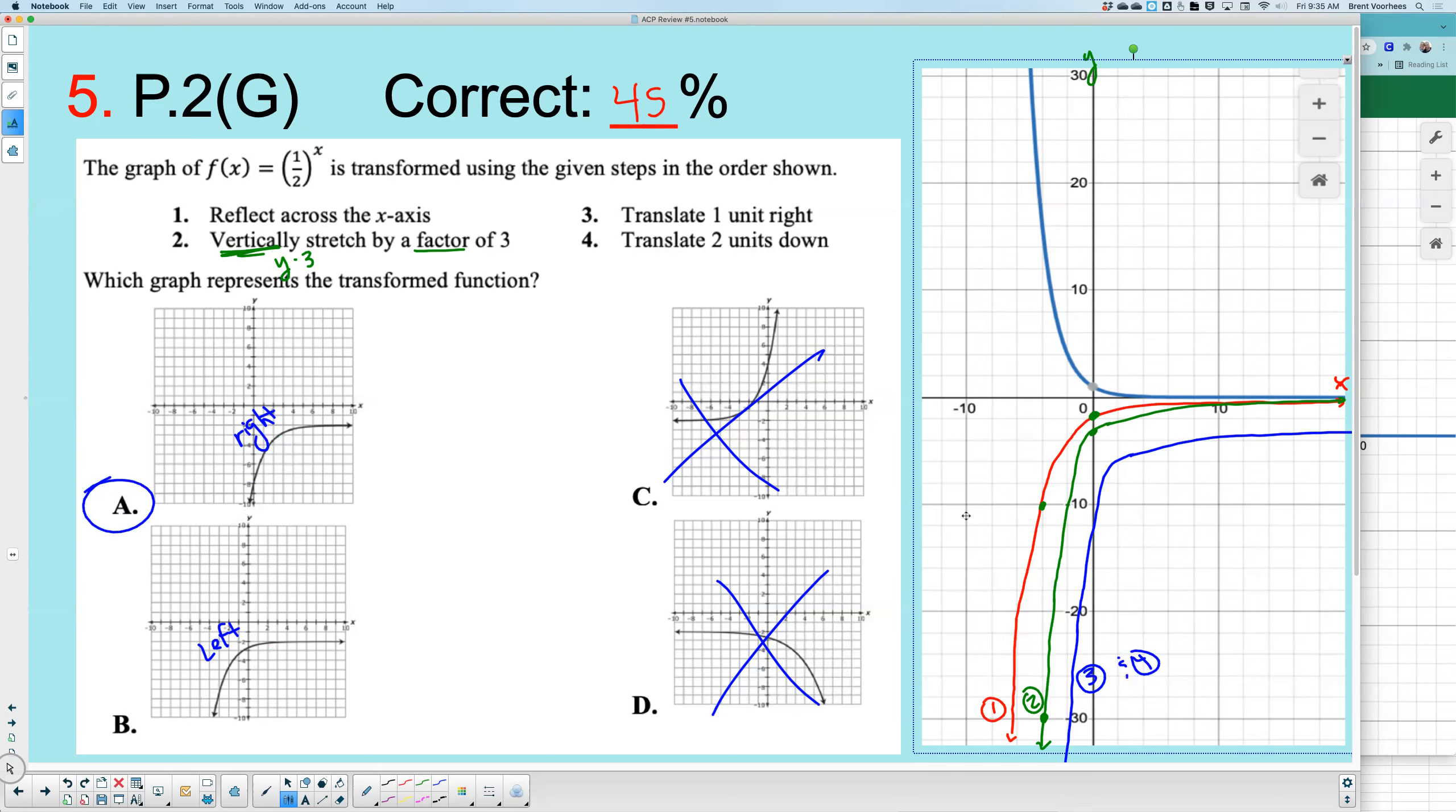My graph obviously is a little bit off. It looks like I'm crossing through at negative 12. Apparently, it's supposed to really cross through at negative 8. But it is what it is. So that was number five. I believe the next lowest was number six.